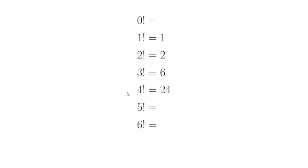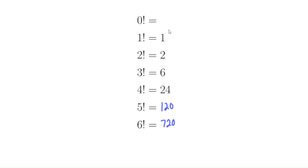Let's first think about what factorials are. 3 factorial is 3 times 2 times 1, which is 6. 4 factorial, as I mentioned, is 24. To figure out 5 factorial, we could do 5 times 4 times 3 times 2 times 1, or just take 4 factorial and multiply it by 5 to get 120. And to get 6 factorial, we take 5 factorial and multiply by 6 to get 720. If we wanted to reverse the process, we would divide — to get from 6 factorial to 5 factorial, we divide by 6, then divide by 5, by 4, by 3, by 2.